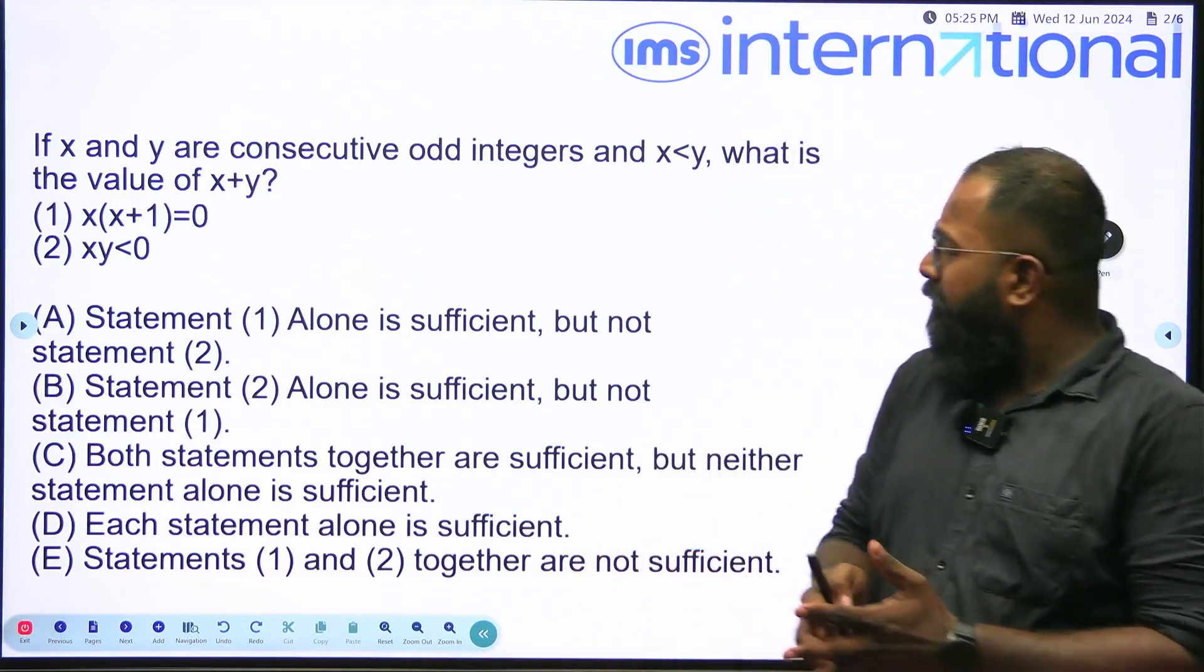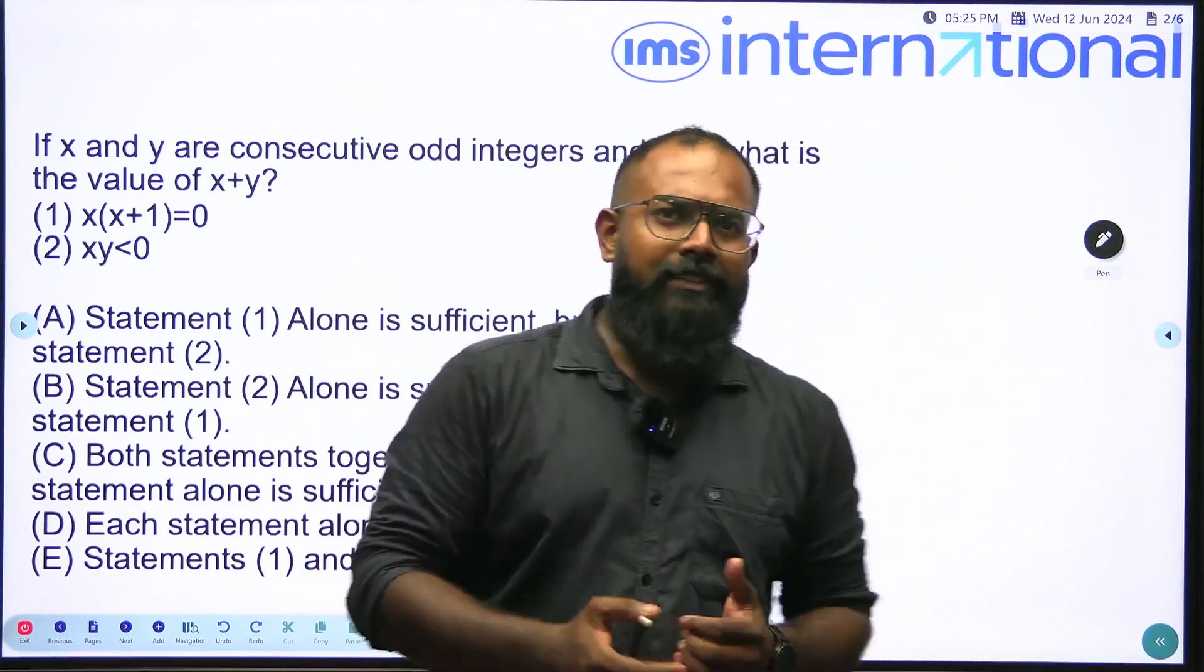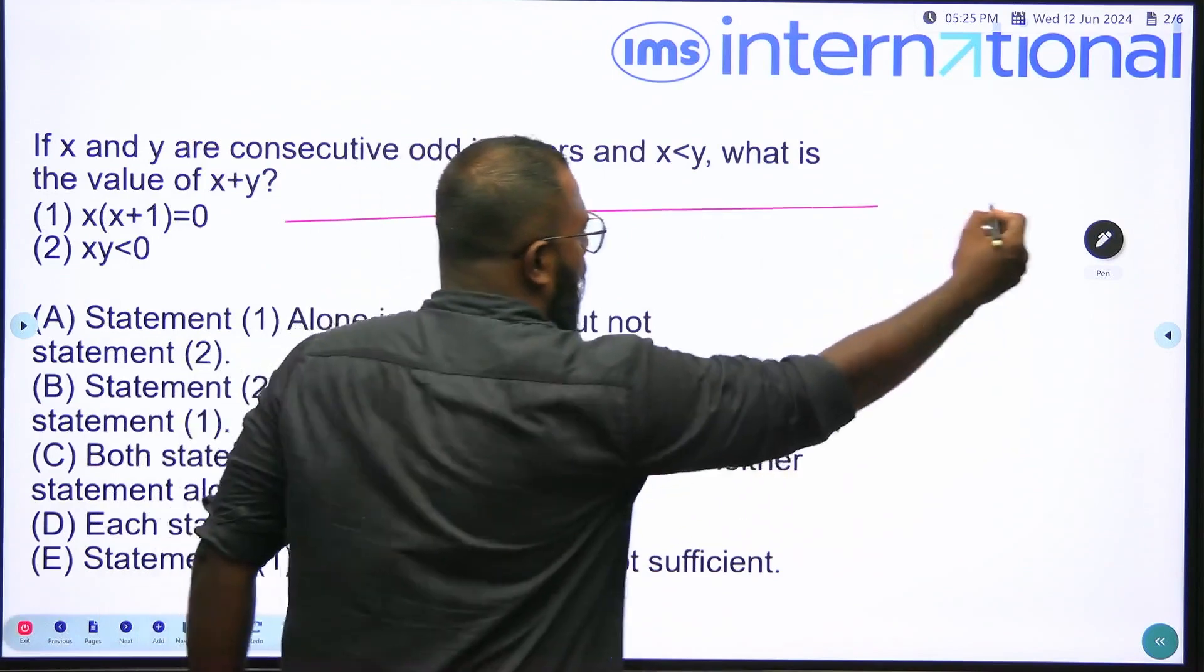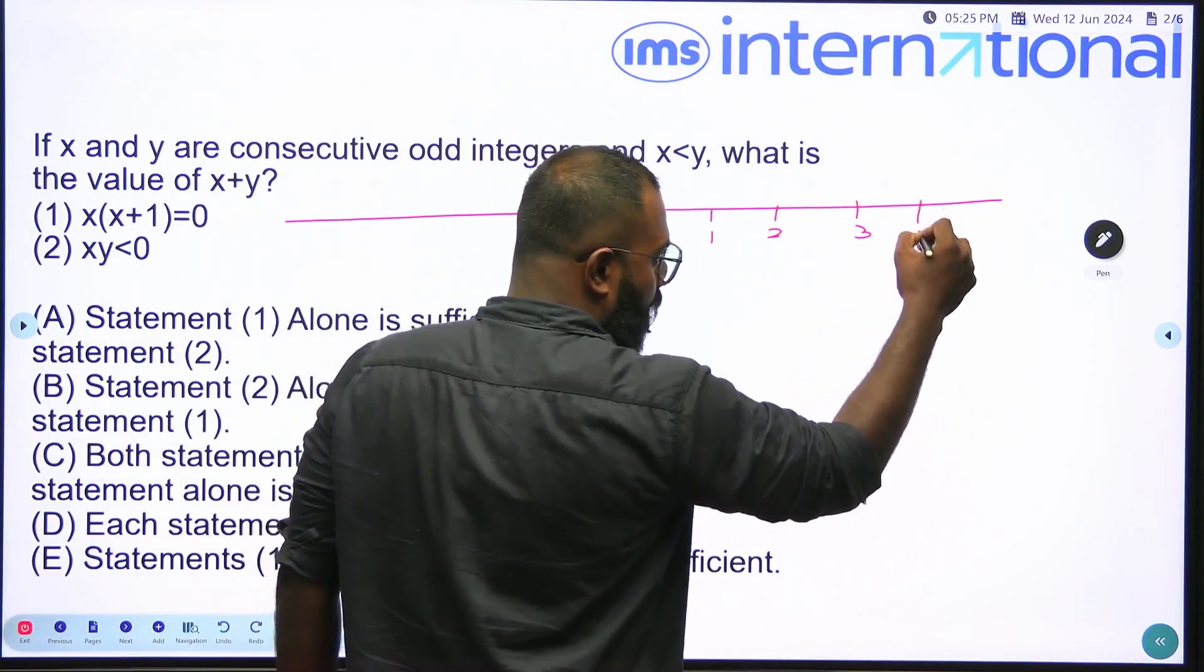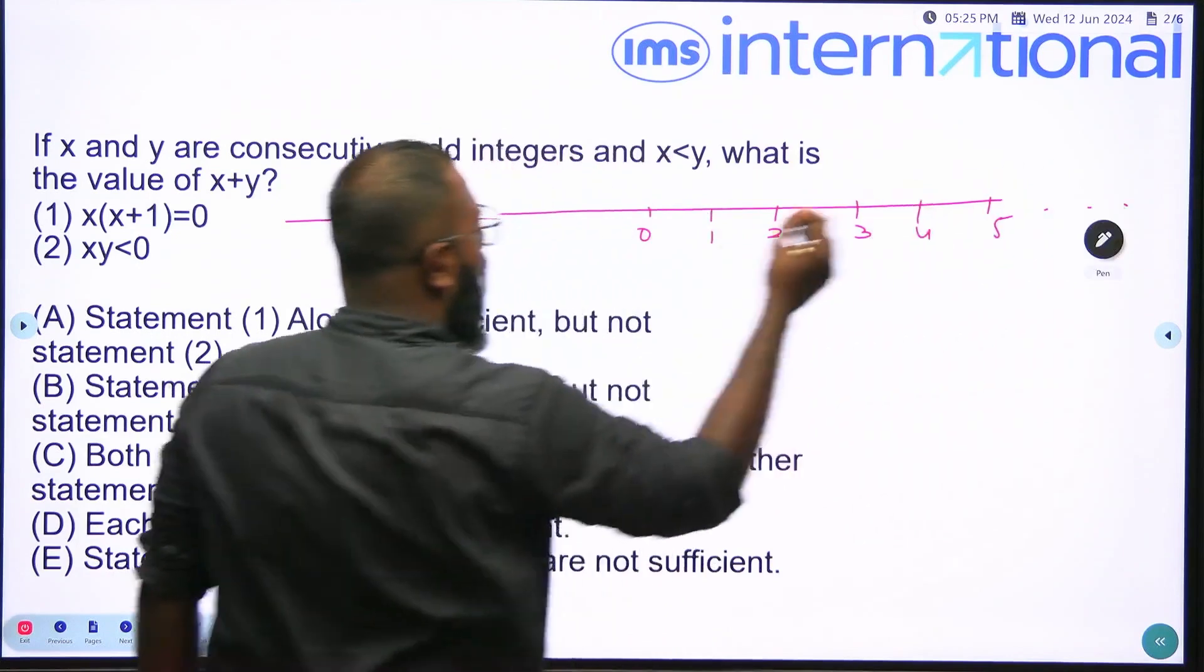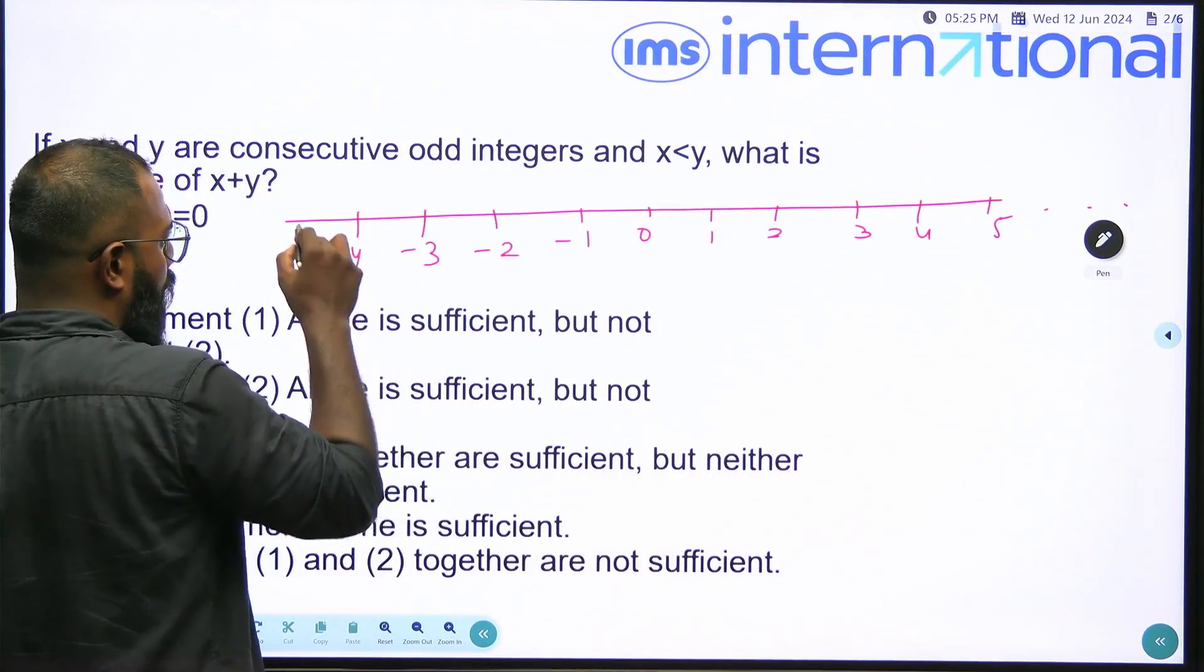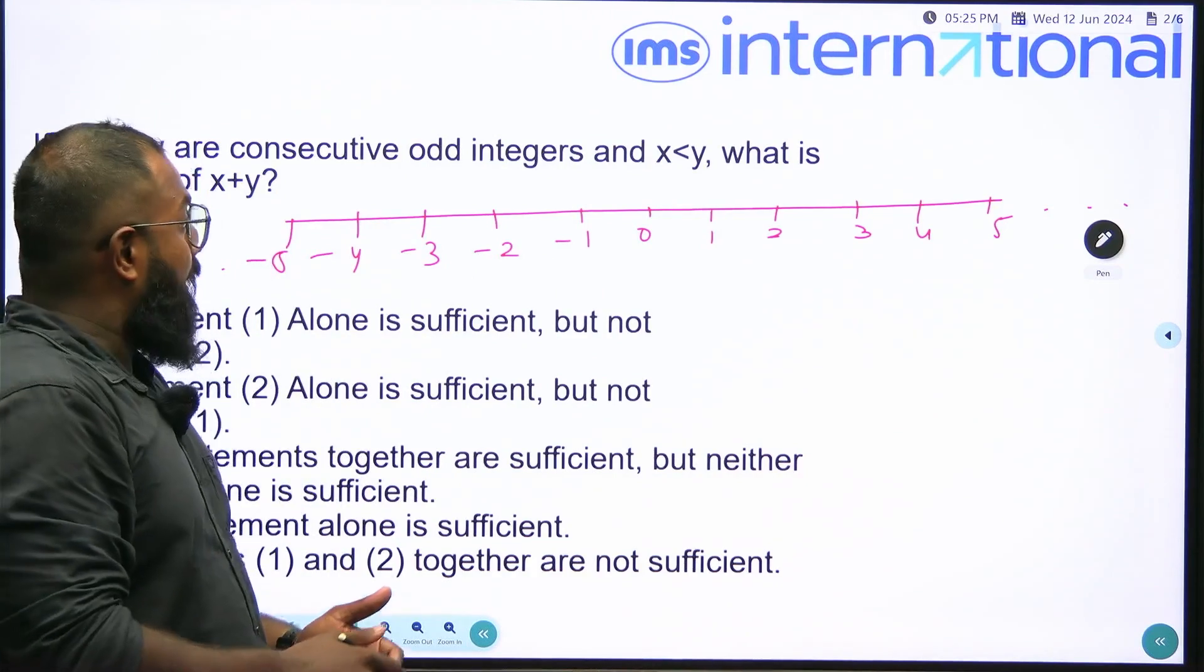Now let's go ahead with the question. X and Y are consecutive odd integers and X is less than Y. What is the value of X plus Y? Now let's discuss what are consecutive odd integers. What are integers? Numbers like 0, 1, 2, 3, 4, 5 and so on and negative 1, negative 2, negative 3, negative 4, negative 5 and so on. What are odd integers?